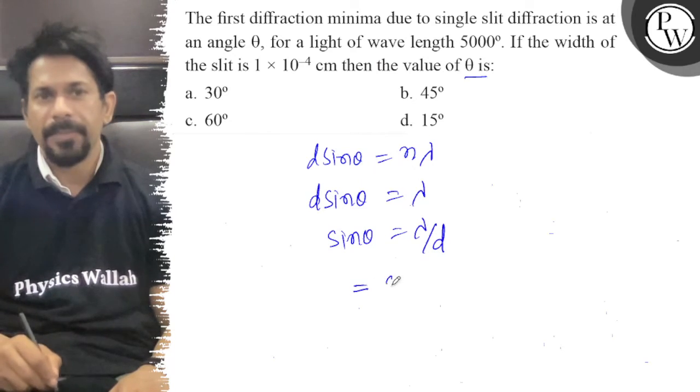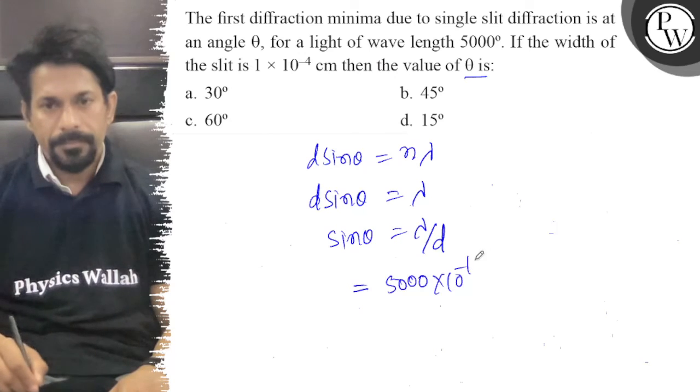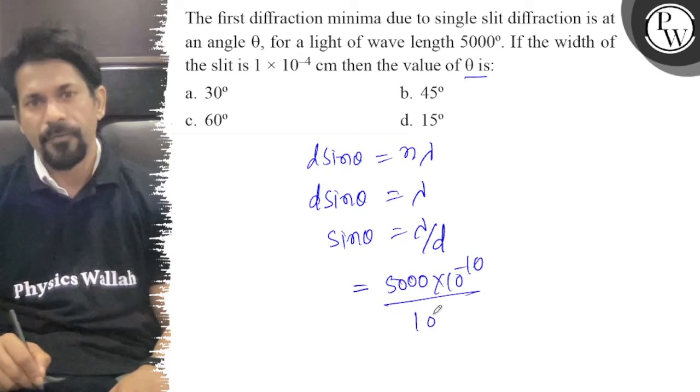Lambda is equal to 5000 Angstroms, which is 5000×10^-10 meters, upon 10^-4.